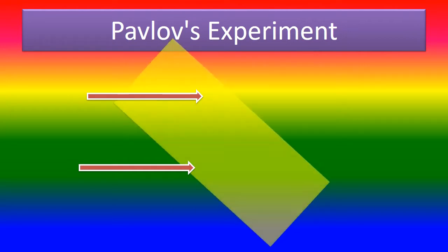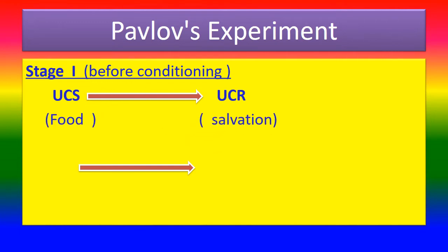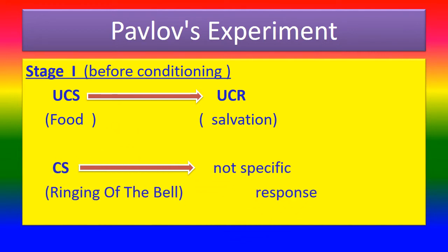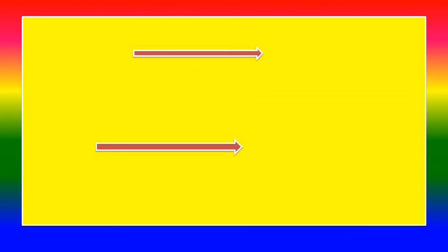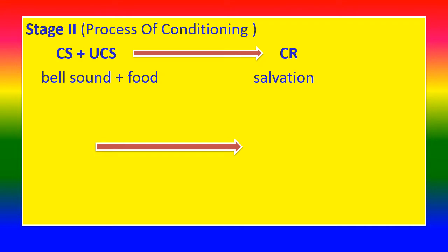Pavlov's Experiment, Stage 1 — Before Conditioning: The Unconditional Stimulus (food) produces the Unconditional Response (salivation). The Conditional Stimulus, which is the ringing of the bell, produces no specific response at this stage.